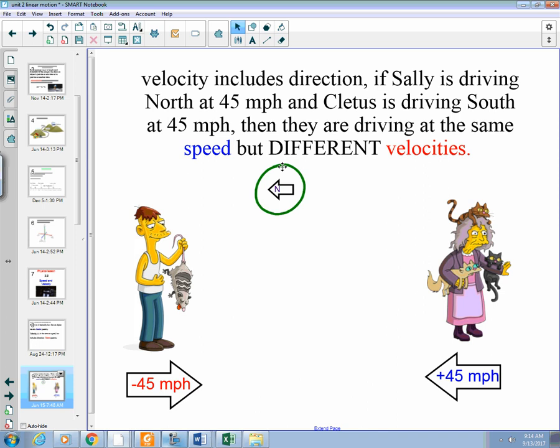North is not always up. It depends on your direction. Try to think of things in two dimensions: north, south, east, west as well as up and down. So, north is going towards Cletus. Note that they are both traveling at 45 miles per hour, so their speeds are the same. However, one is positive because Sally is heading north and one is negative because Cletus is heading south.